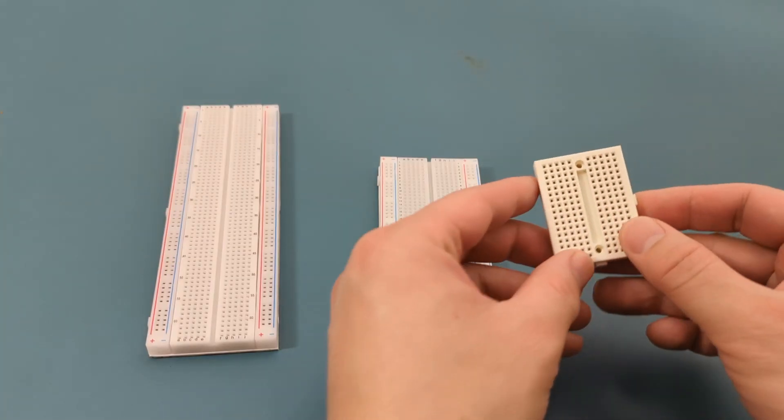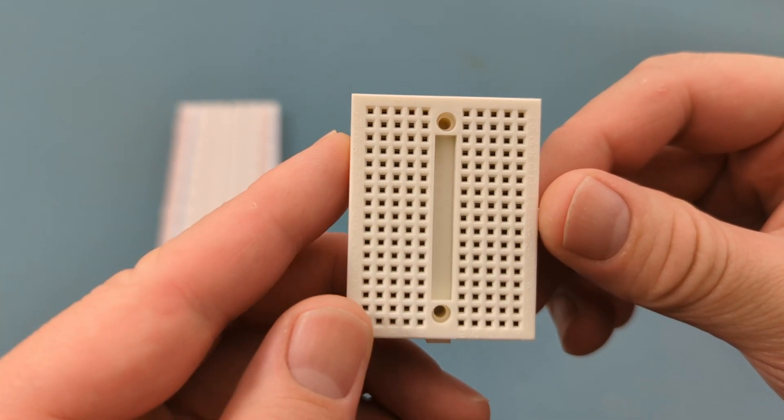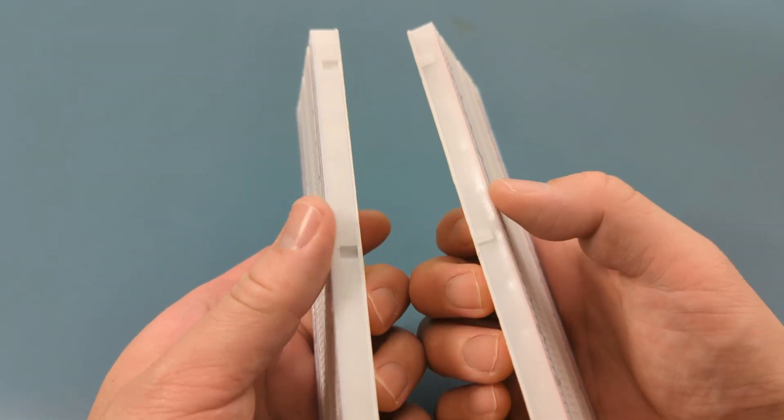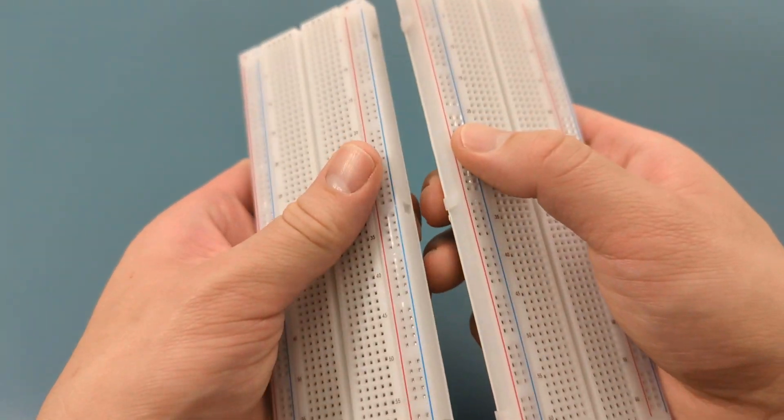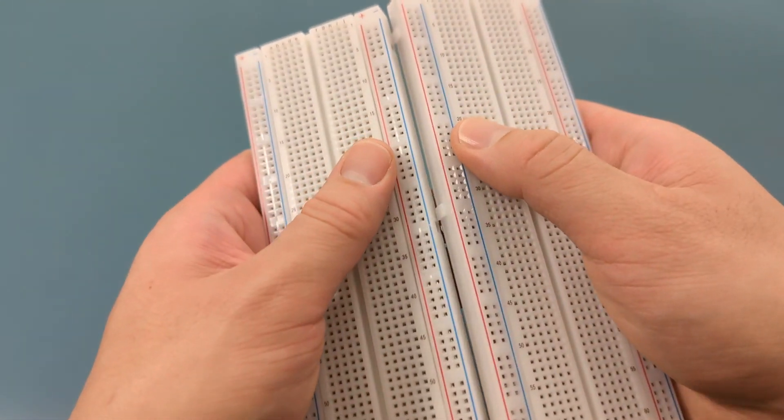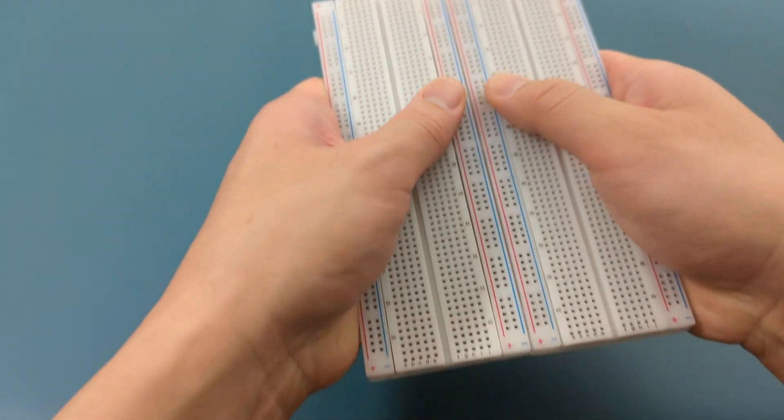Mini breadboards are great for smaller circuits, or when you're tight on space. Many breadboards even come with little notches or tabs that allow you to snap them together. So, if your project outgrows your board, just snap on another one.